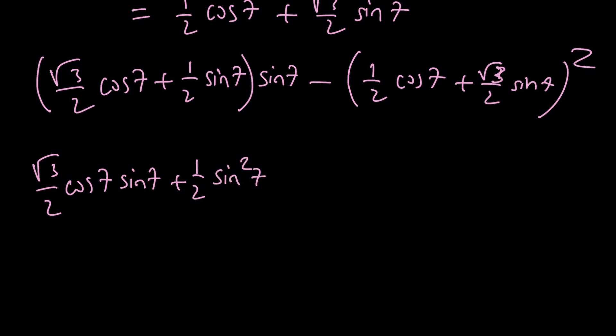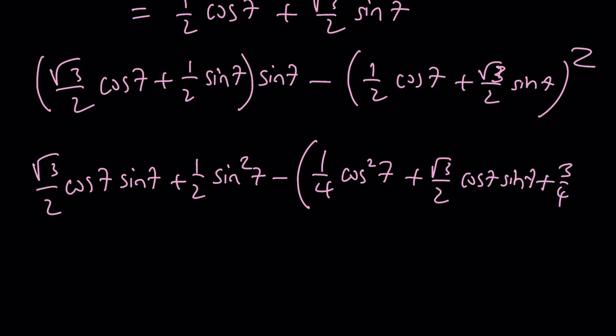And then this one is going to be three terms. If you use the formula, 1 fourth cosine squared 7 plus 2ab is going to give us root 3 over 2 cosine 7 sine 7. And finally, root 3 over 2 squared, which is 3 fourths, multiply by sine squared 7.